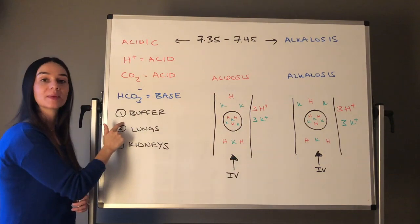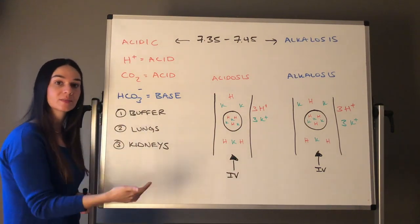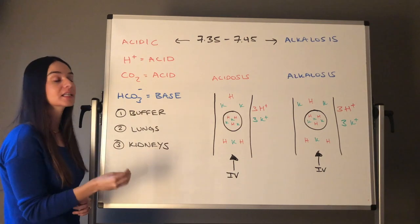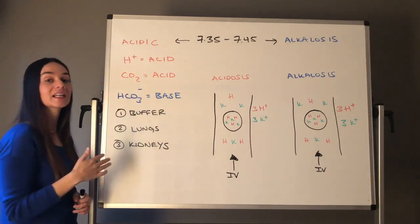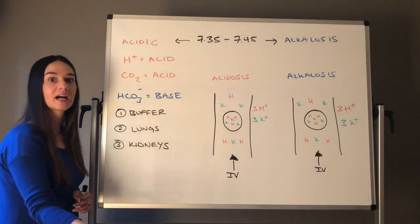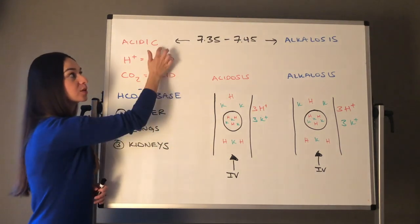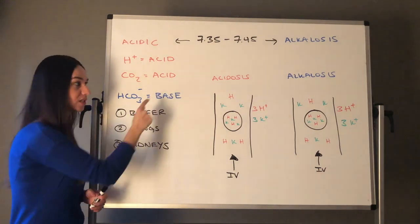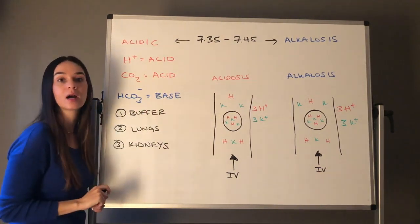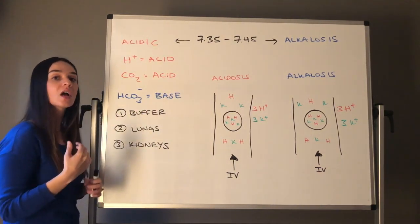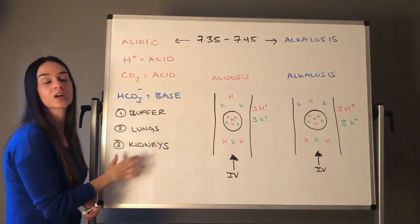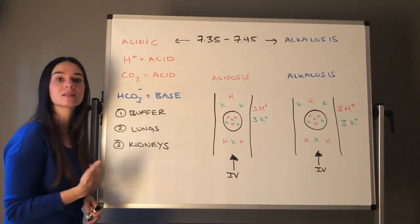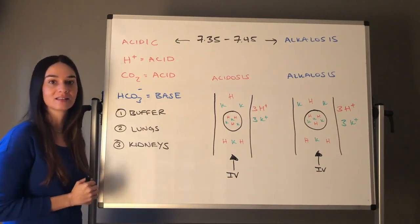If we can't maintain homeostasis with our buffer system kicking in, our lungs can kick in. Lungs primarily control carbon dioxide, so they can help either excrete more CO2 if we're too acidic or help retain CO2 if we're in an alkalotic problem. And then if that doesn't work, our kidneys will kick in. So these are our three primary systems of defense against acid-base imbalances.